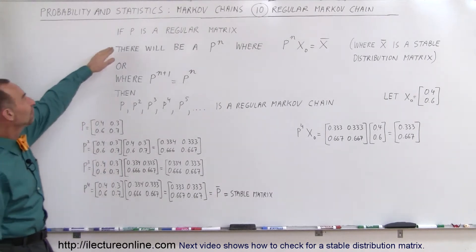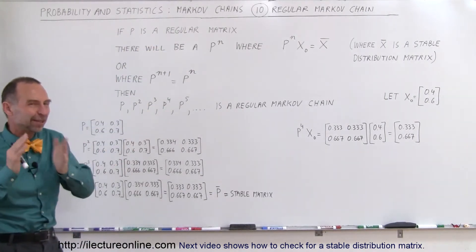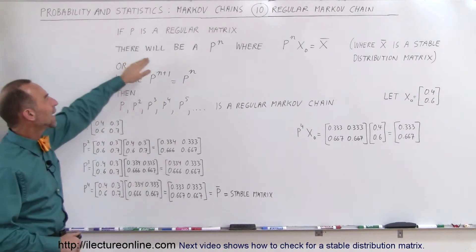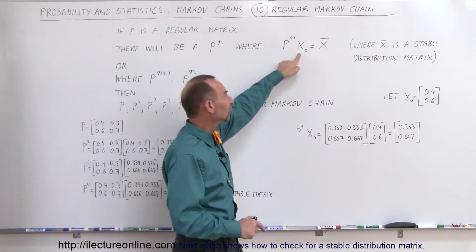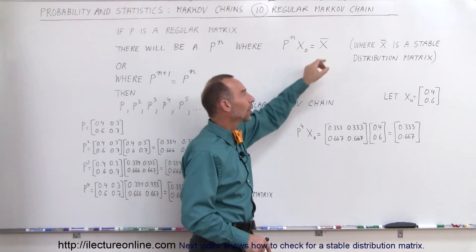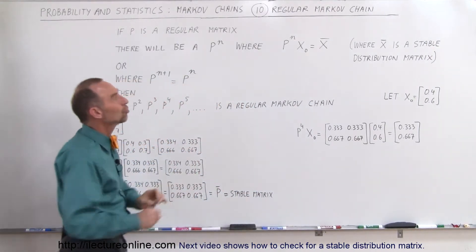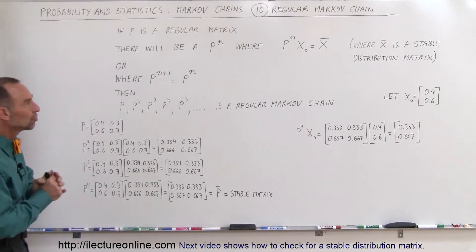Let's assume we have a regular matrix. If P is a regular matrix, remember P is that probability matrix, there will be a P to the n power where P^n times the initial state equals the stable distribution matrix, the stable distribution state.